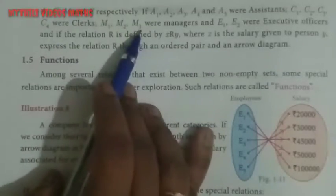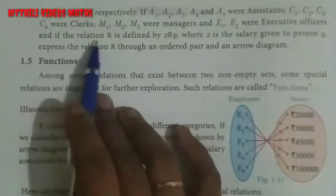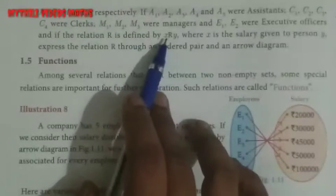M2, M3 - 3 managers. And then E1, E2 - 2 executive officers are there.